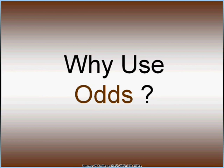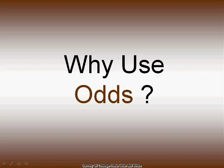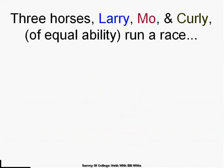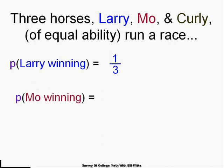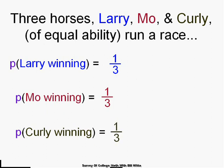Why would we use odds? We wouldn't — we'd use probabilities. But stores, newspapers, and horse tracks use odds, and we need to understand them. Consider three horses of equal ability — Larry, Moe, and Curly — running a race. The probability of Larry winning is 1 out of 3. The probability of Moe winning is 1 out of 3. The probability of Curly winning is 1 out of 3. The sample space is 3, and there's only one way each horse can win.